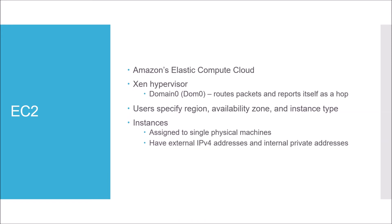The cloud provider the authors used for their research is EC2, Amazon's Elastic Compute Cloud. They hypothesized their research would generalize to other cloud providers. EC2 uses the Xen hypervisor, which has a privileged virtual machine called Domain Zero. Domain Zero is responsible for routing packets from user instances and reports itself as a hop in a traceroute, which is going to become really important.